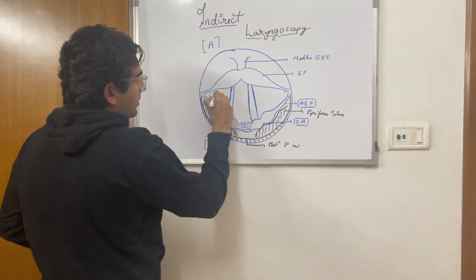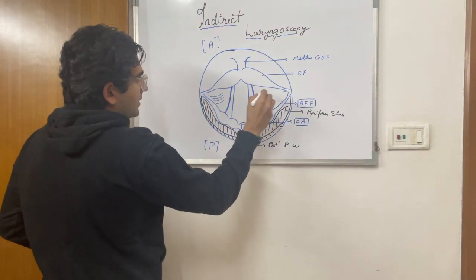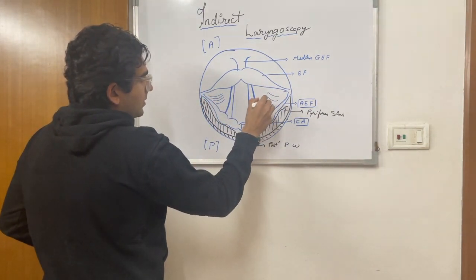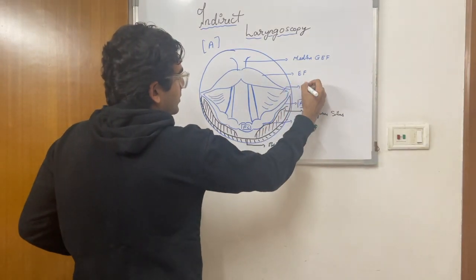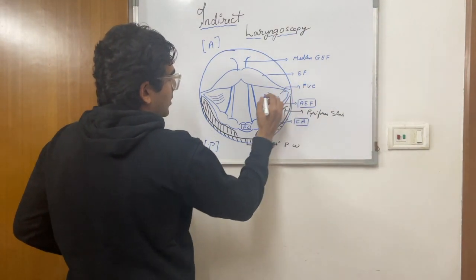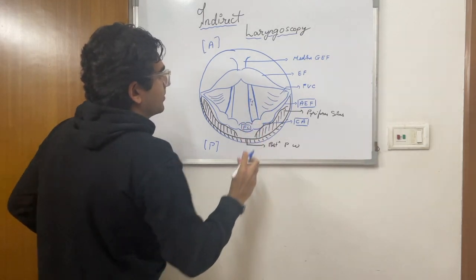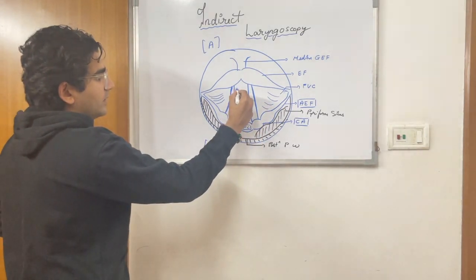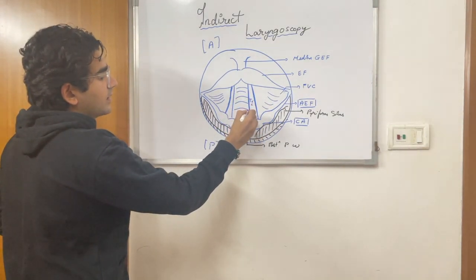You will also be able to see the vestibular folds, or we call them the false vocal cords. So these are the false vocal cords, and these are the true vocal cords. And right here in between is the trachea.